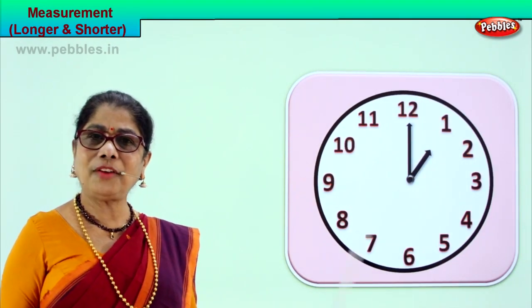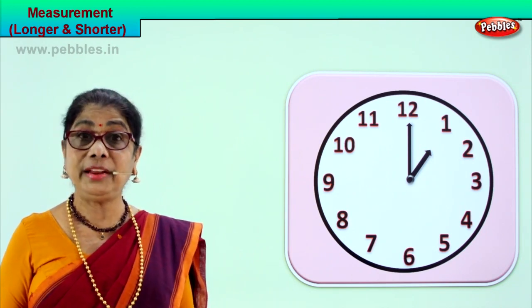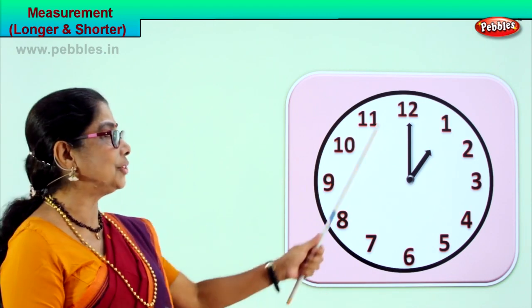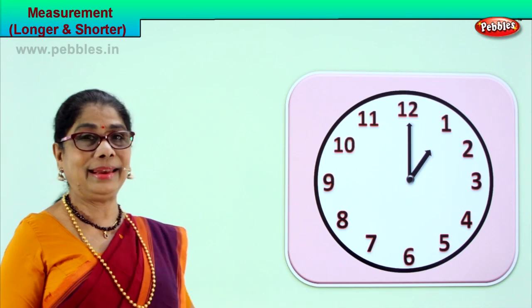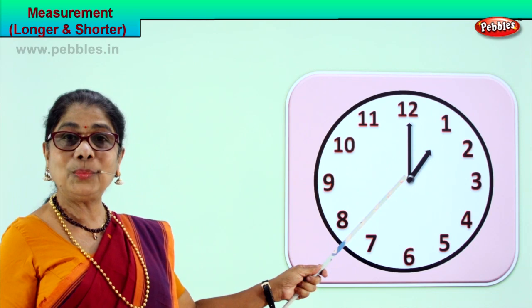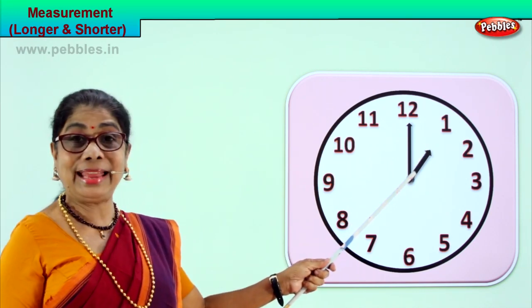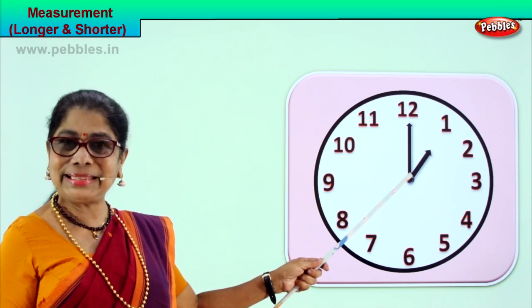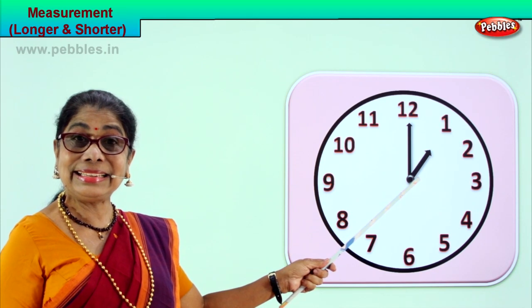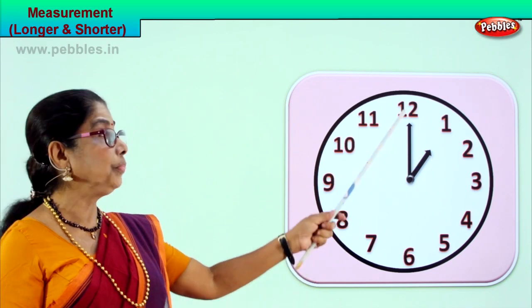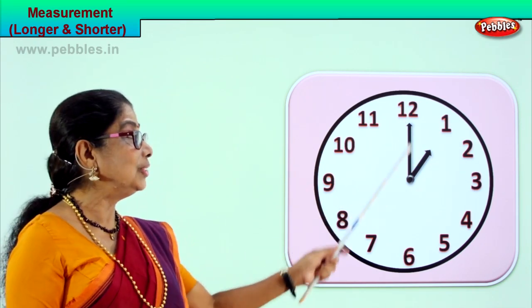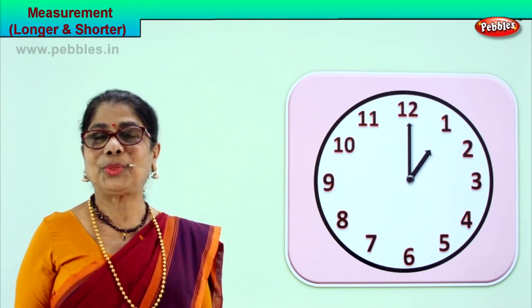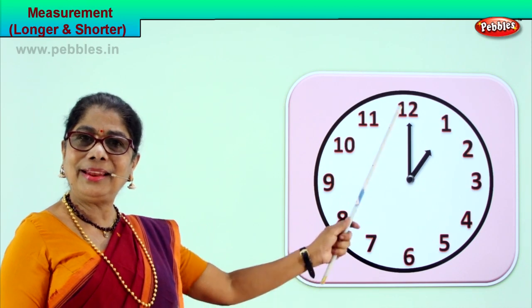Look at the clock face very carefully. The clock has two hands — a long hand and a short hand. This is the longer hand, which is the minute hand. This is the shorter hand of the clock, and that tells the hour. The longer hand is the minutes hand, the shorter hand is the hour hand. The shorter hand tells the hour, the longer hand tells the minutes. So we say the minutes hand is longer than the hour hand. What are we comparing? We are comparing the two hands — longer, shorter.